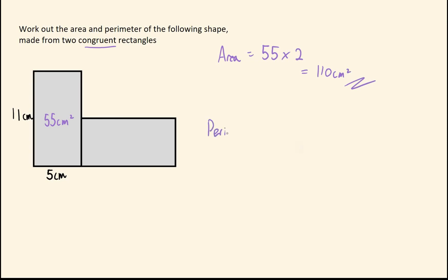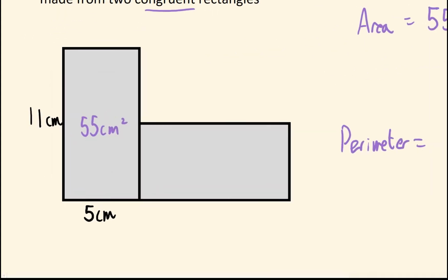Now onto the perimeter. Because we have congruent shapes, we can in fact fill in a lot of these lengths. If this is 5, then so is this. I know for each rectangle the long lengths are 11 and the short lengths are 5. So I've got everything except for this length here I haven't quite worked out.